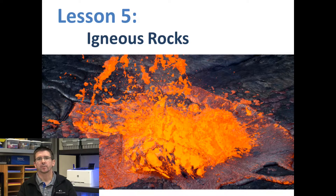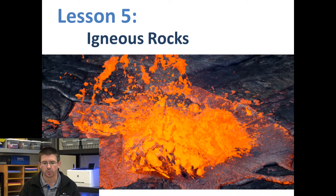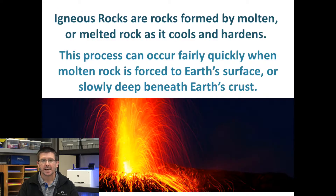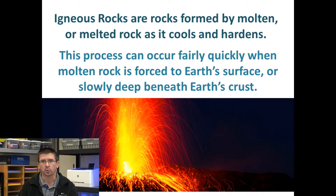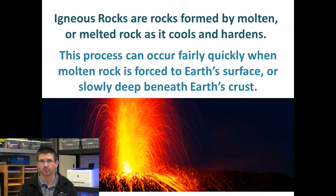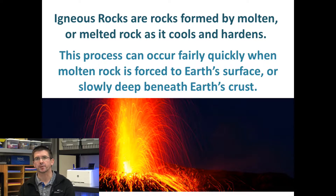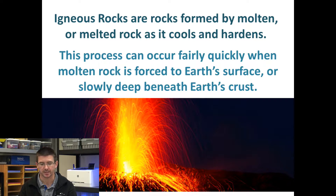The first classification of rocks that we're going to be talking about are igneous rocks. Igneous rocks are actually formed from molten rock, or liquid rock, that cools off and hardens. When rock gets really hot beneath the Earth's crust, it actually melts into a liquid. And once that rock re-hardens to form a new rock, we call that an igneous rock.